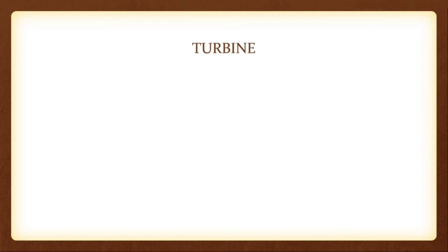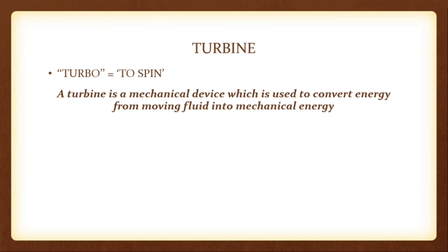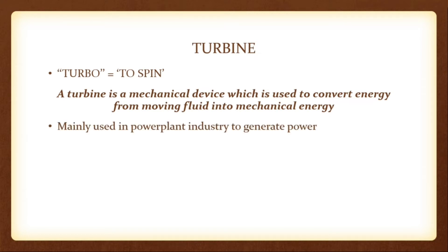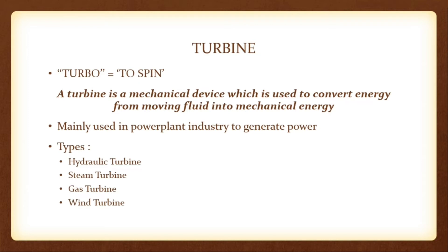Let's see the introduction of turbines. The word turbine has been derived from the Latin word 'turbo,' which means to spin. A turbine is a mechanical device used to convert energy from moving fluid into mechanical energy. This mechanical energy can further be used to generate electricity or perform other useful work. It is mainly used in power plant industries and can be classified as hydraulic turbines, steam turbine, gas turbine, and wind turbine.